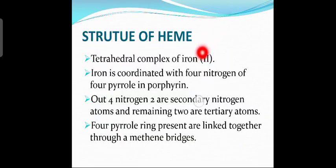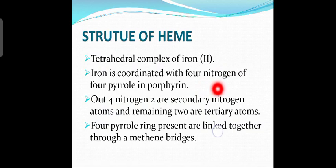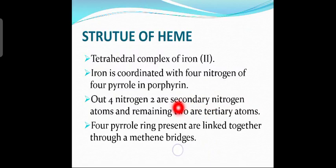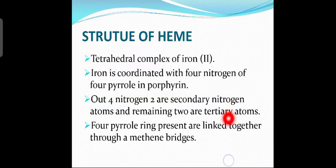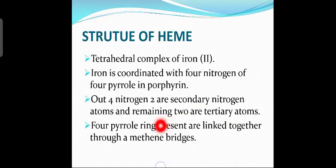The structure of heme: heme is a tetrahedral complex of iron(2+). Iron is coordinated with four nitrogen atoms of the four pyrrole rings in porphyrin. Out of four nitrogen atoms, two are secondary (NH) and two are tertiary (N). The four pyrrole rings present are linked together through methane bridges such as CH, CH2, or CH3 groups.